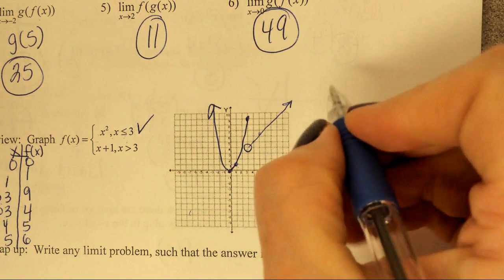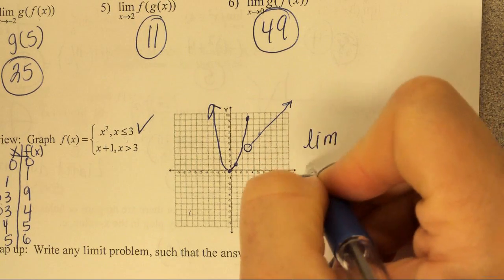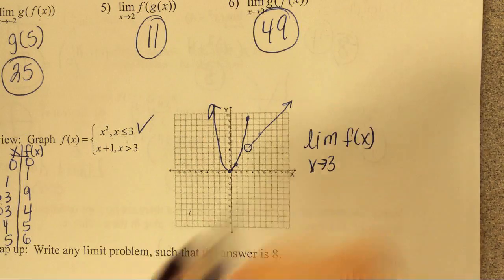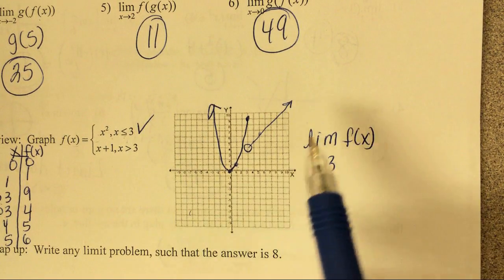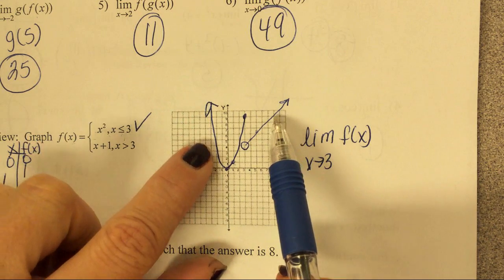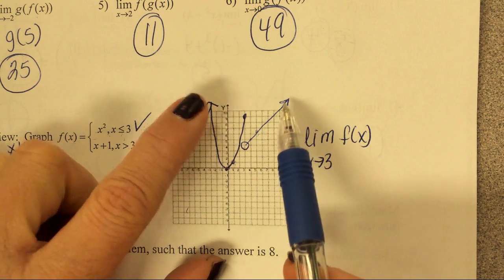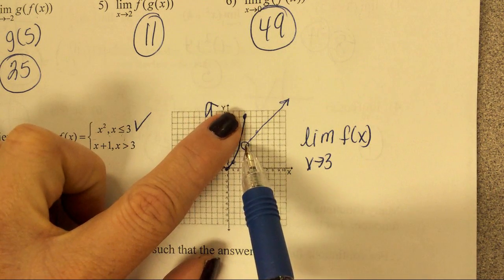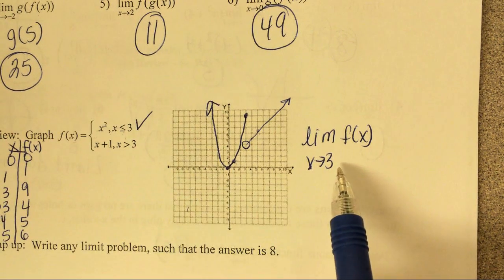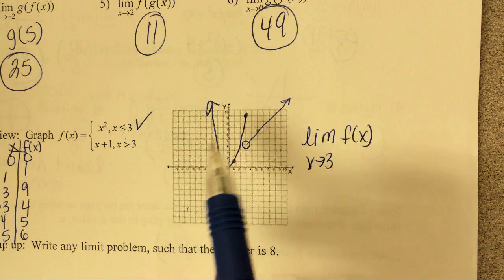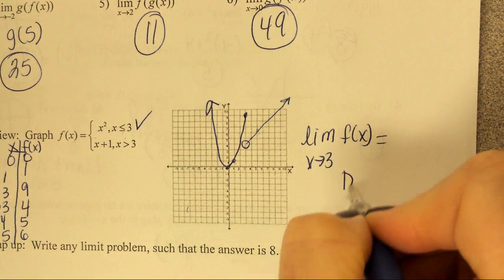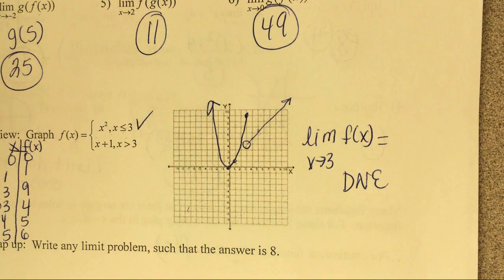Later on, we will be asking you, what is the limit as x approaches three of this function? Well, the limit means the y value has to be the same as we approach three from both the left and the right. Are we approaching the same y value from the left and the right? So, what do you think we would say about this limit for this function? Some people are kind of whispering it. This would be that the limit does not exist for something like that.